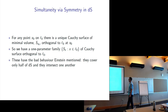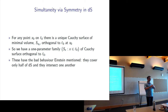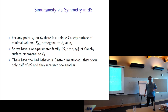We can also define simultaneity via the symmetry approach: for each point on my world line, I find a Cauchy surface of minimum volume that's orthogonal to my world line at that point — the equivalent of the nice geometric thing we do in Minkowski spacetime. We get a one-parameter family of Cauchy surfaces orthogonal to our world line. These go all the way around, but they cover only half of de Sitter spacetime.